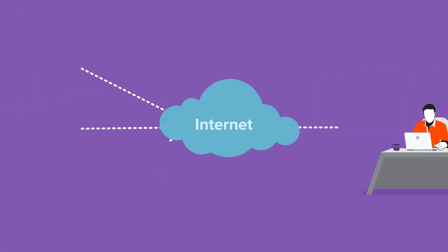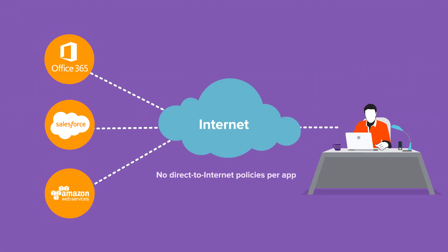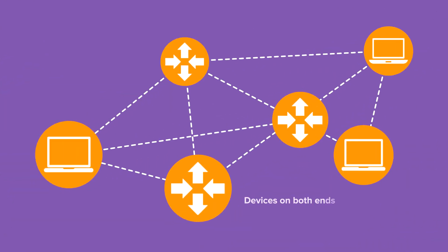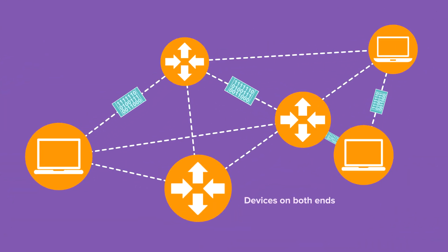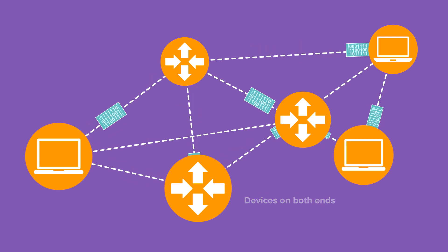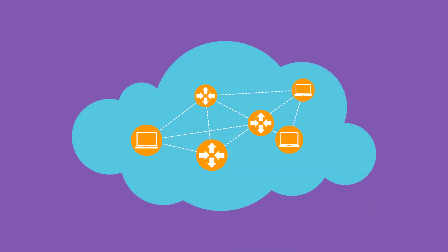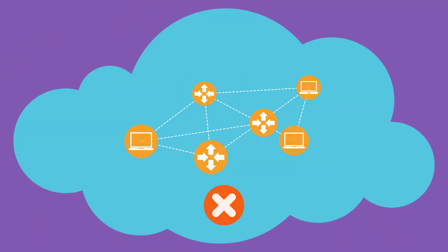Second, with legacy WANs, you can't set direct to internet policies per application. It's all or nothing, which doesn't work for cloud apps. Third, packet routed traffic engineering needs devices on both ends of the wire. This doesn't work in the cloud.